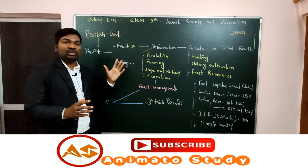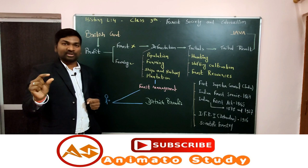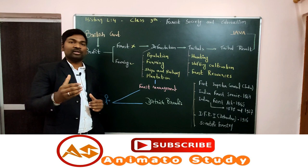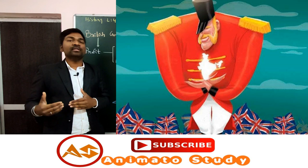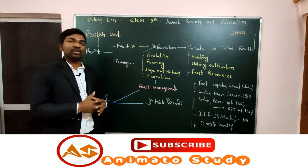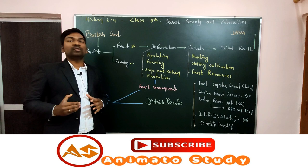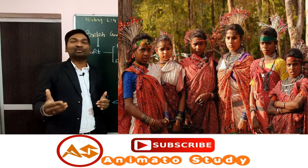Here we see the key terms. The first is colonialism — colonialism means the process of making a colony, like Britain made India their colony. The next important term is forest society — what type of society was living in the forest area? On that time, and even today, tribals are living in forests, so tribals are basically known as forest society.